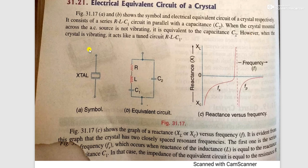When the crystal is mounted across an AC source but is not vibrating, it is equivalent to the capacitance C2. However, when the crystal is vibrating, it acts like a tuned circuit RLC1.